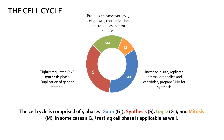G1, S, and G2 are together called interphase. Today, however, we will focus our attention on the fourth part of the cell cycle called mitosis. This is where cell growth stops and the cell splits into two daughter cells — basically the process of cell division, which is critical for development, growth, healing, and regeneration.